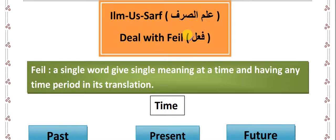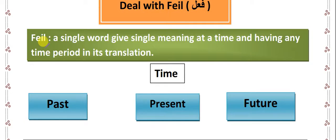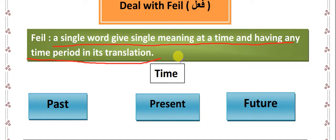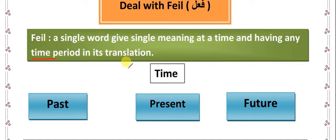For knowing the detail of fi'l, first we need to understand what fi'l actually is. Fi'l is a single word giving a single meaning at a time and having any time period in its translation. With ism, we already learned that ism also gives a single meaning at a time, but it doesn't have any time period. In the case of fi'l, we have a time period in its translation — either the translation carries the meaning of the past or tells us things happened in the past.